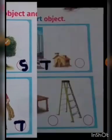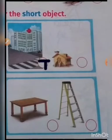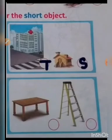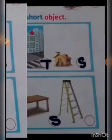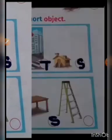Now, what is the next picture? Hospital and house. The hospital is tall and house is short. So write T in front of the hospital and write S in front of the house. Our next picture is table and ladder. Table is short and ladder is tall. So we will write S in the circle in front of the table.